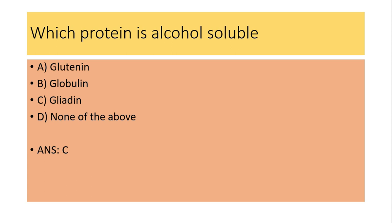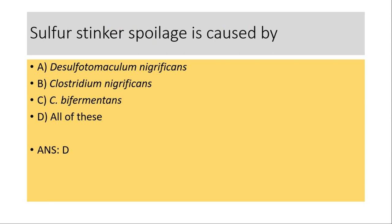Which protein is alcohol soluble? (a) Glutamine, (b) Globulin, (c) Gliadin, (d) None of the above. The answer is (c) Gliadin. Gliadin is alcohol soluble; glutamine is water soluble. We have discussed these questions in our food science series as a separate video.